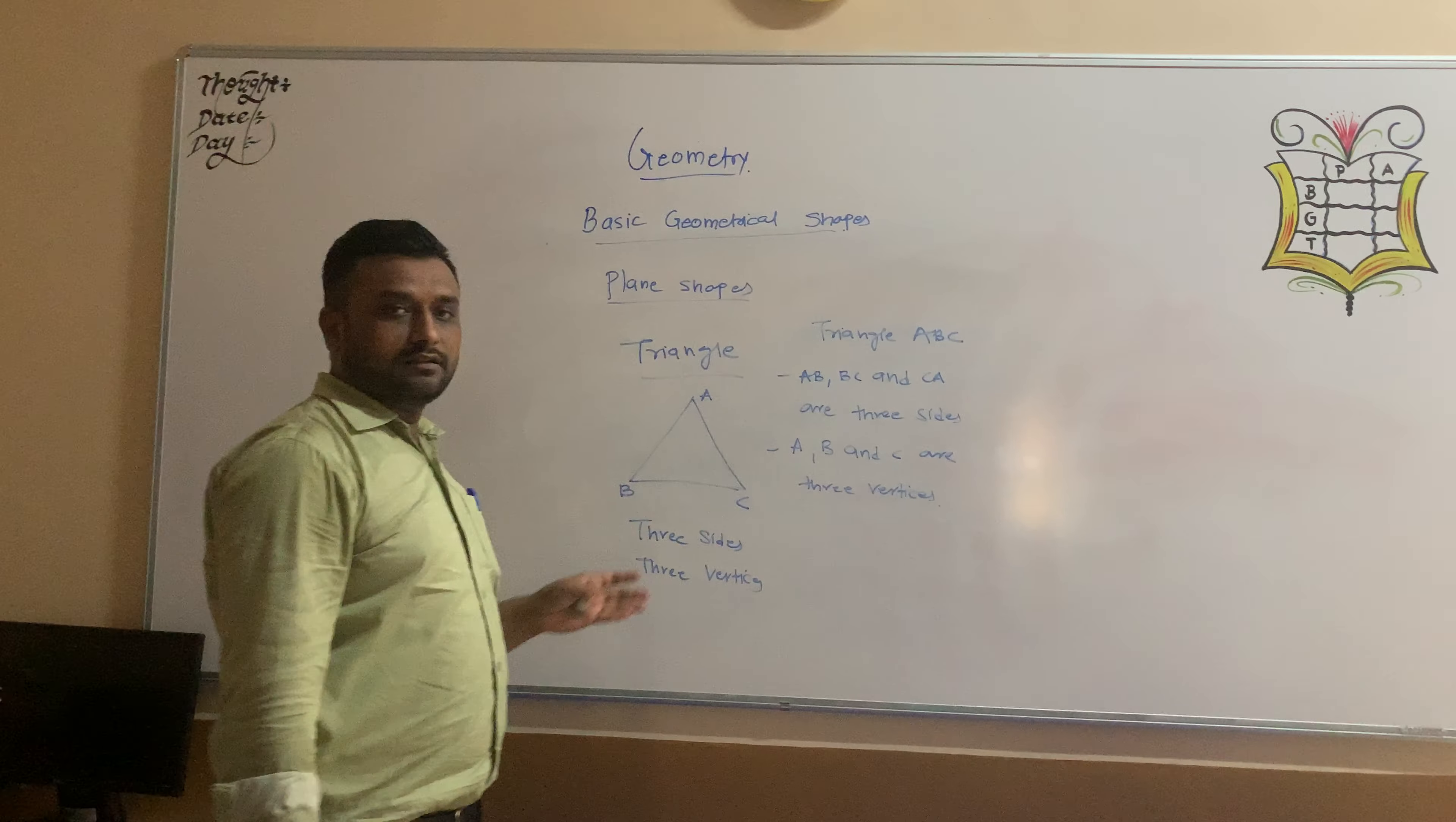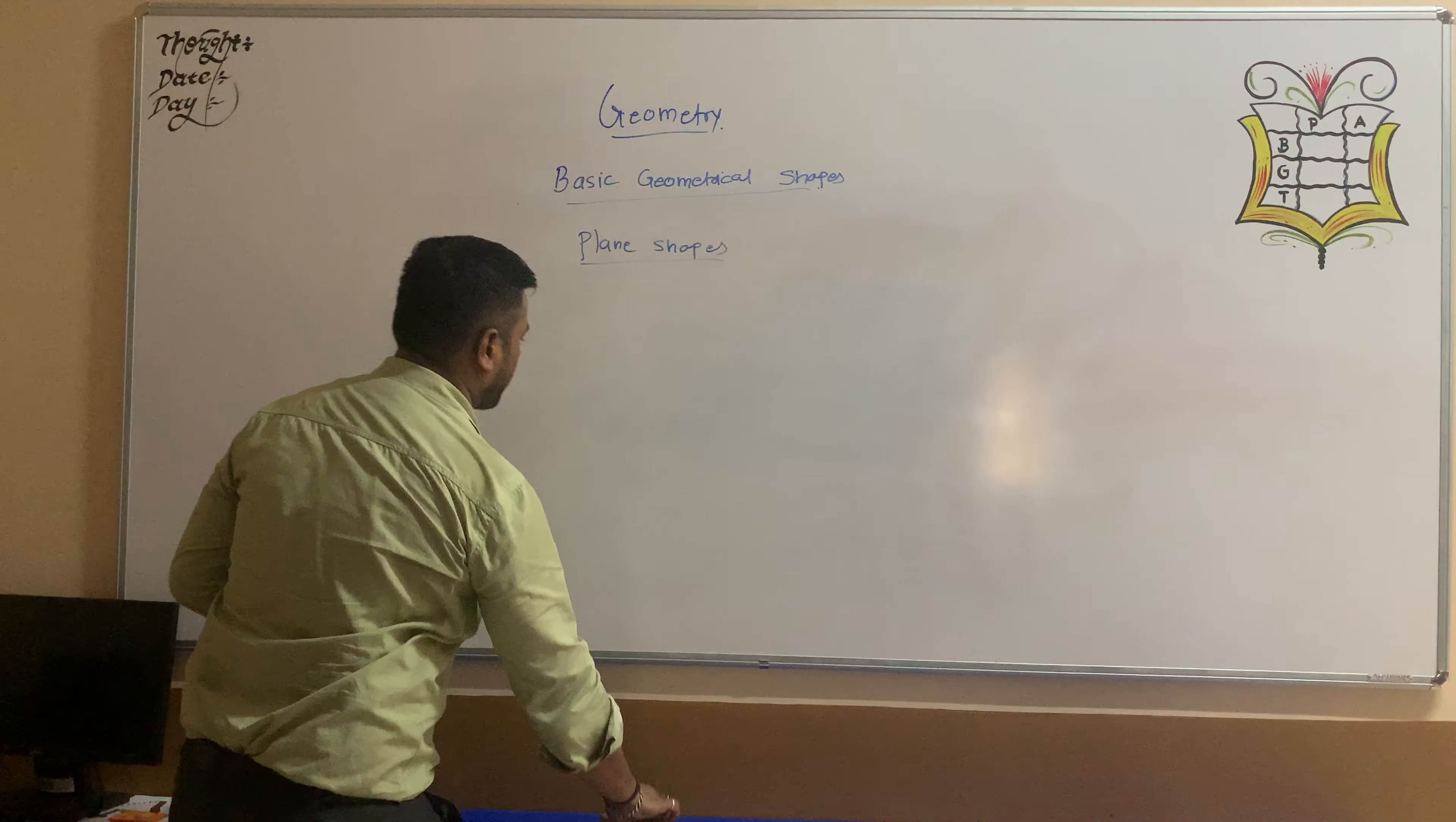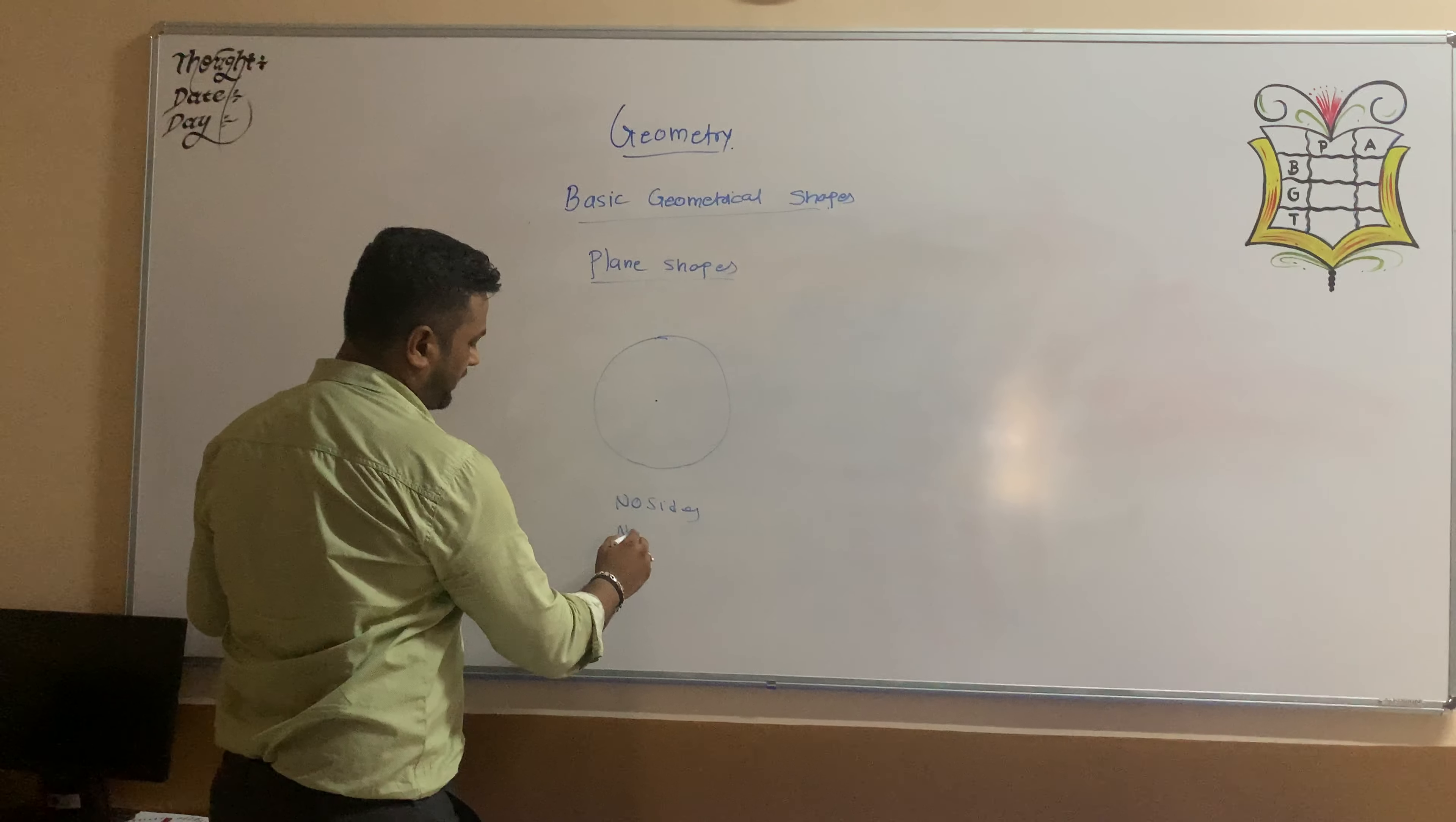This is the Triangle that is having three sides and three vertices. The next plane set is circle. So first of all, circle is having no sides and no vertices.